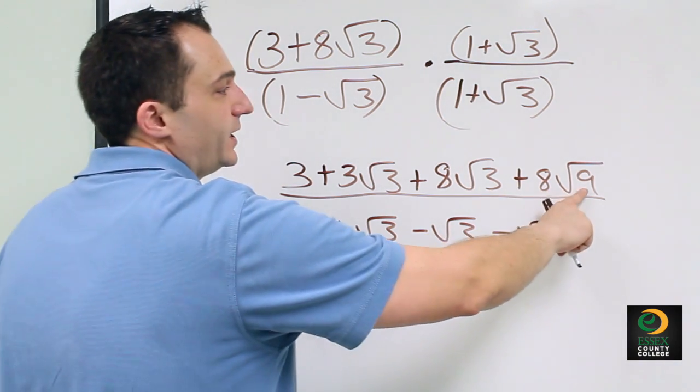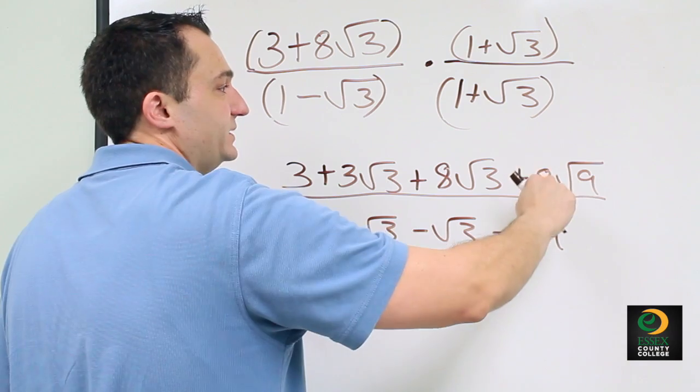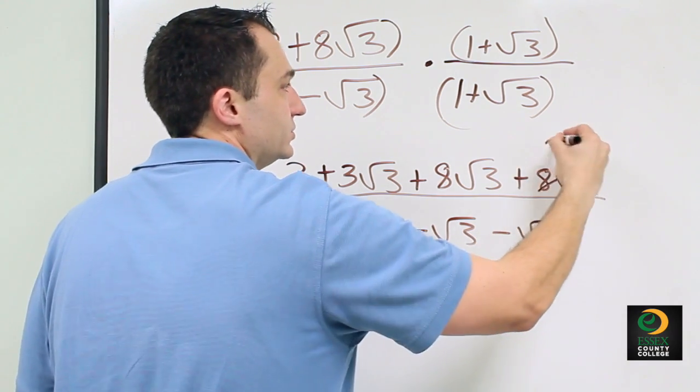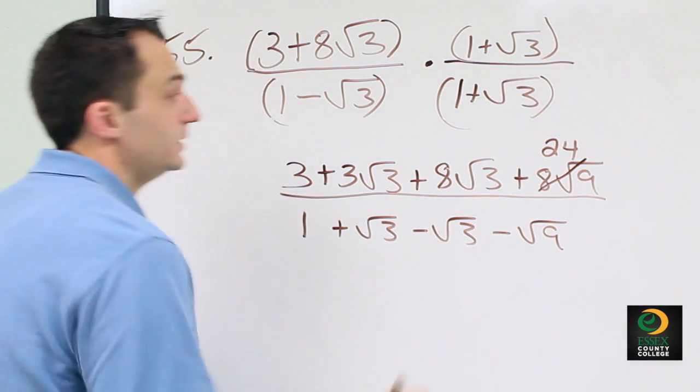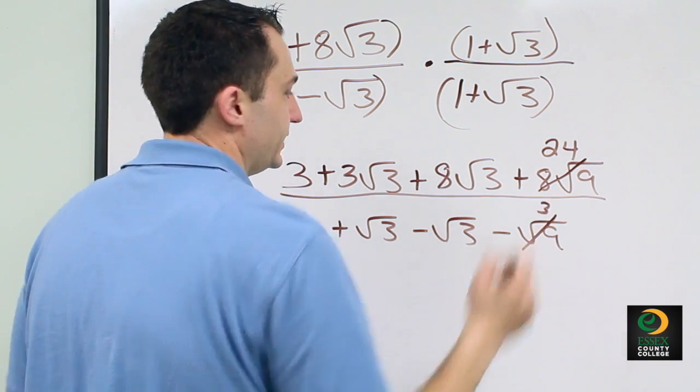So the square root of 9 is 3. 3 times 8 gives us 24. Square root of 9 is 3 once again.